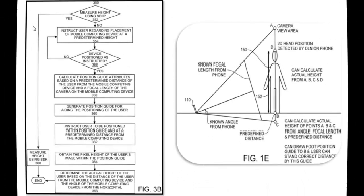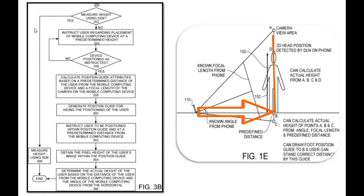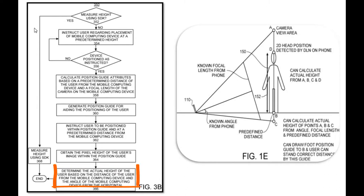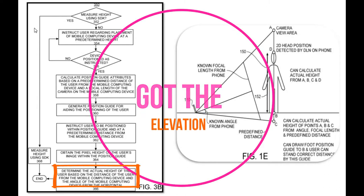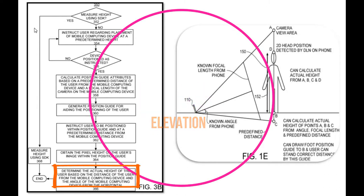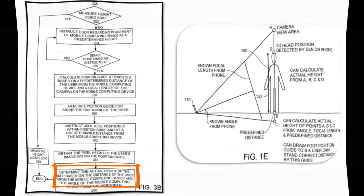Once the person is at the predefined distance with respect to the reference marker, the pixel height of the user's image is computed. The actual height is found with relative computation of the mobile angle with respect to the predefined distance. Overall, it involves a relative measure of pixel height, focal length, and predefined distance.